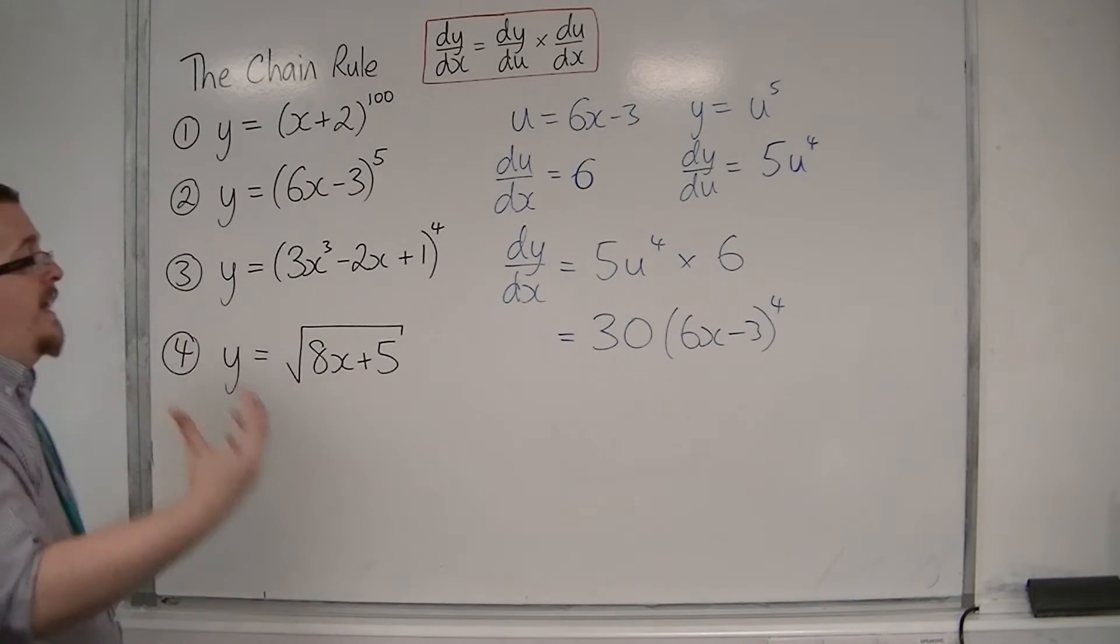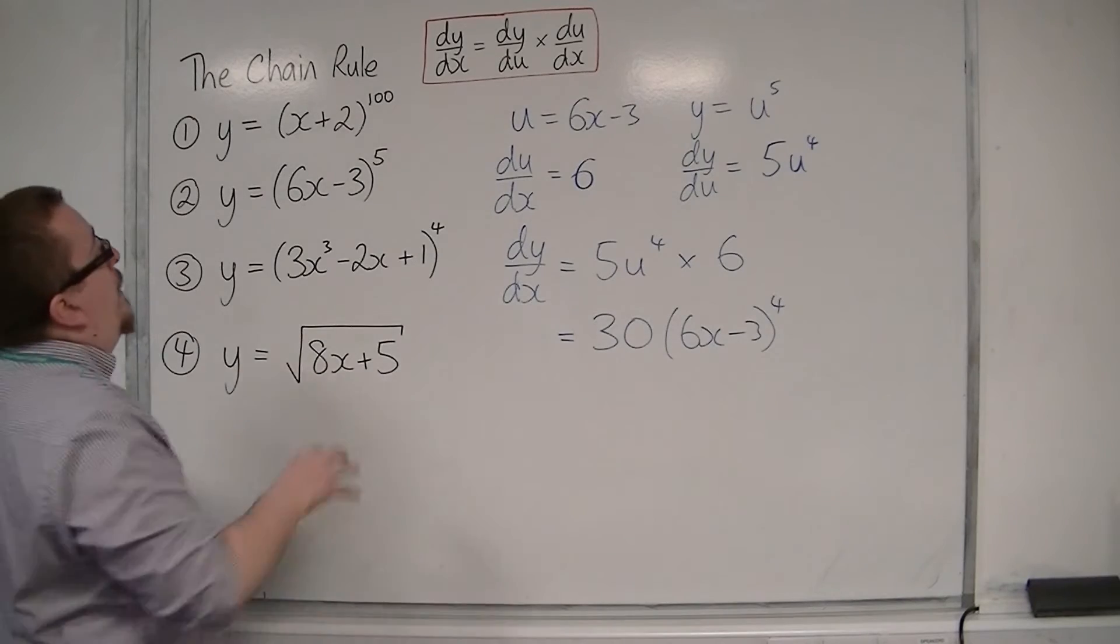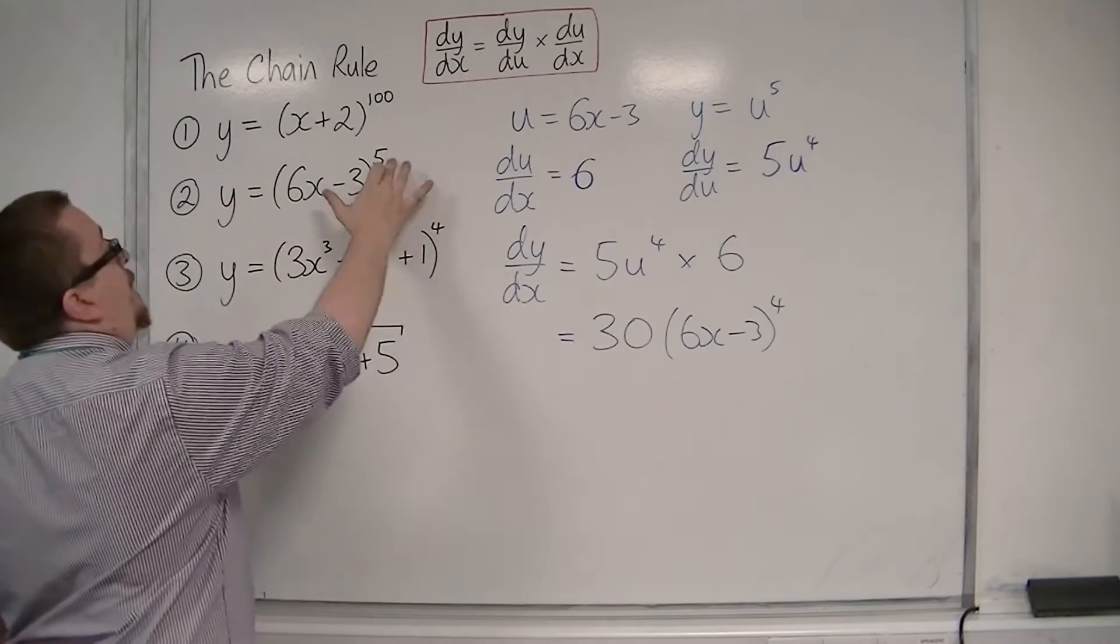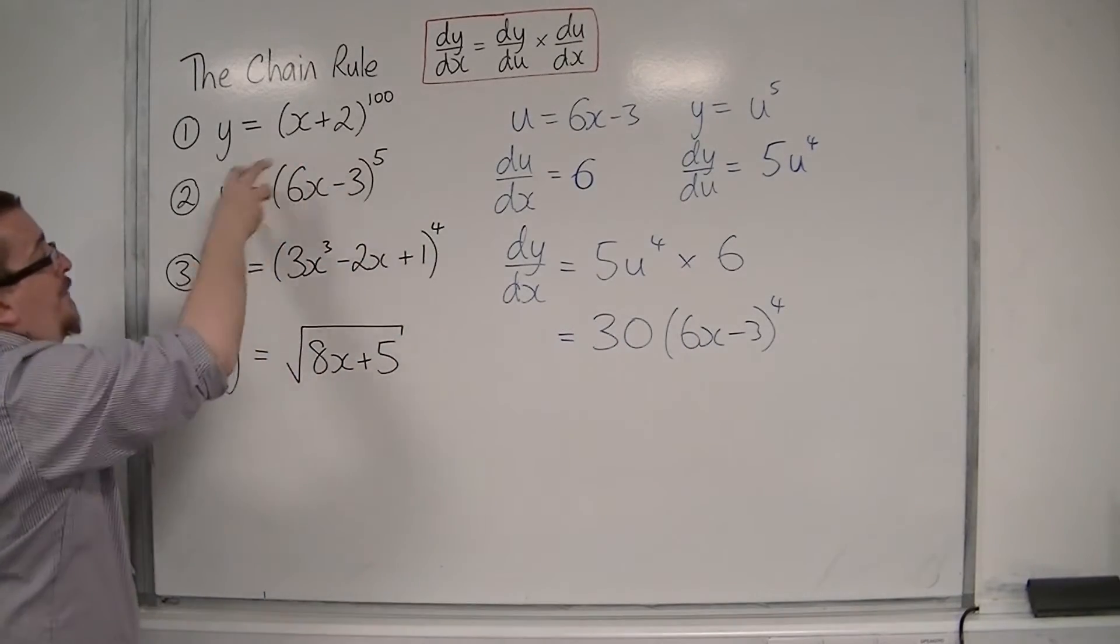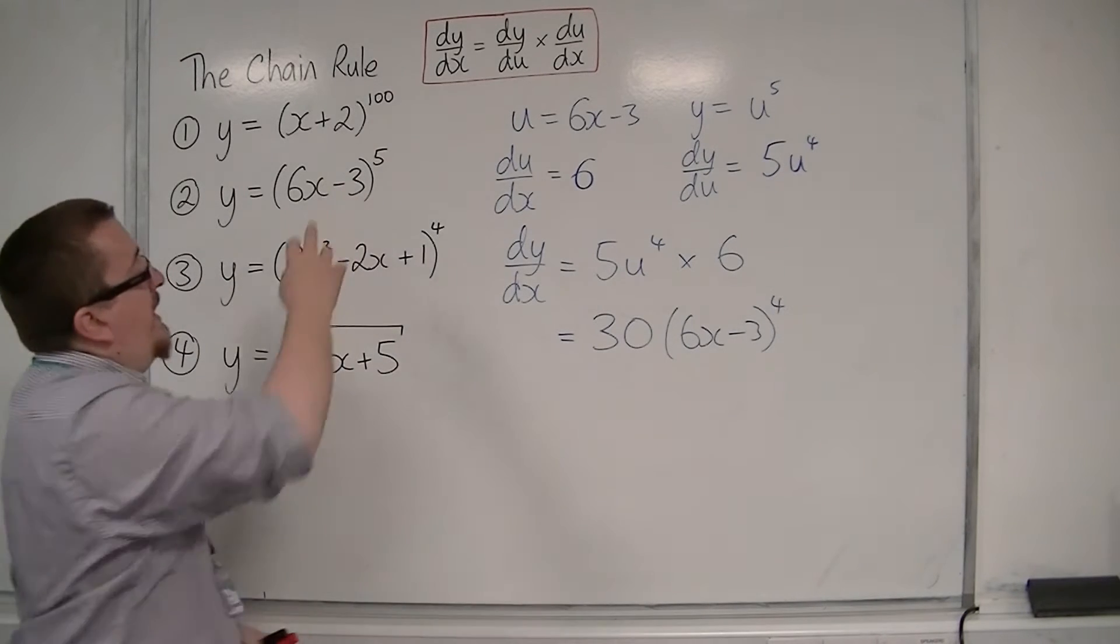Hopefully you're starting to see the pattern emerging, how the derivative of what's inside comes outside, and the 5 comes down to the front. You're getting the 6 from the inside and the 5 coming down. That makes the 30, and then we're taking 1 off the power.